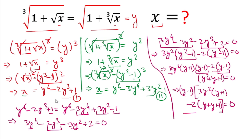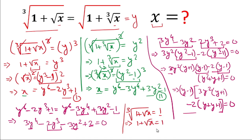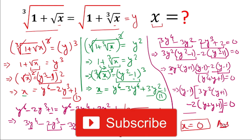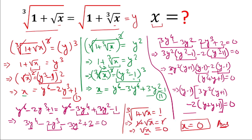With y equal to 1, we go back to the first equation: cube root of (1 plus square root of x) equals 1. Cubing both sides: 1 plus square root of x equals 1. So square root of x equals 0, and therefore x equals 0. We have solved the expression — the value of x is 0. Friends, please leave a comment about the video and do not forget to subscribe to the channel. Thank you for watching.